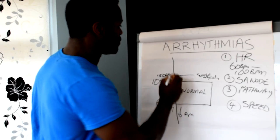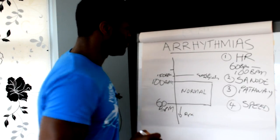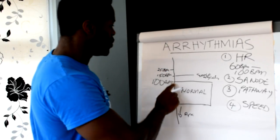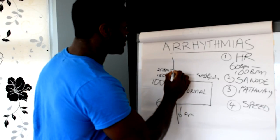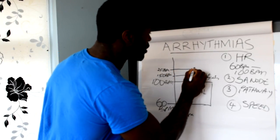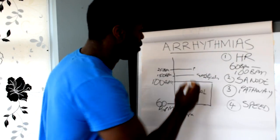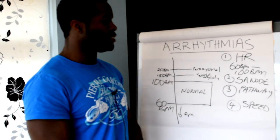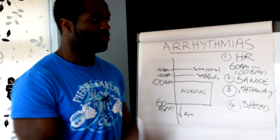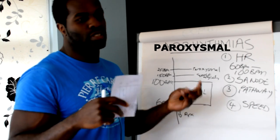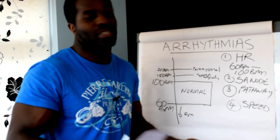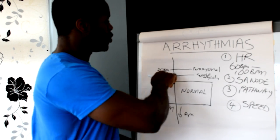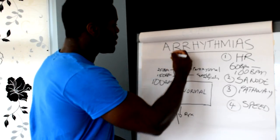If you go up further — say to about 250 beats per minute — this is what we call paroxysmal tachycardia. Why is it paroxysmal? Because it comes and goes. So paroxysmal tachycardia is around 250 beats per minute.